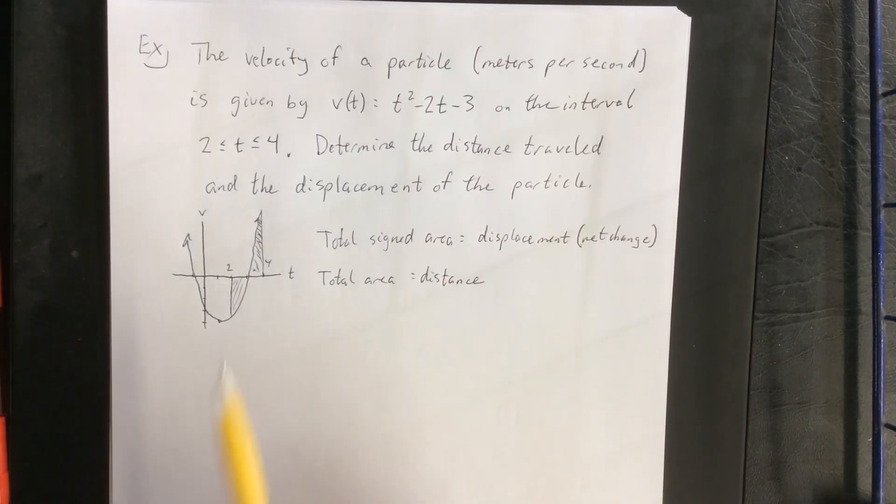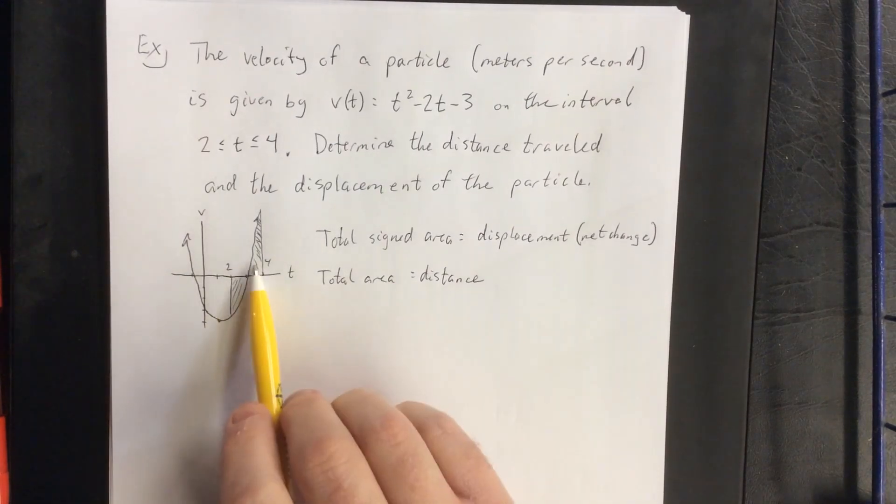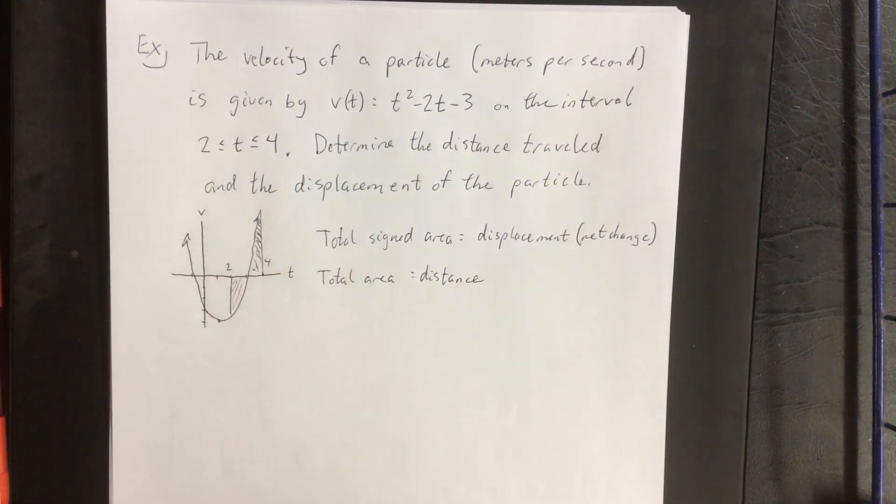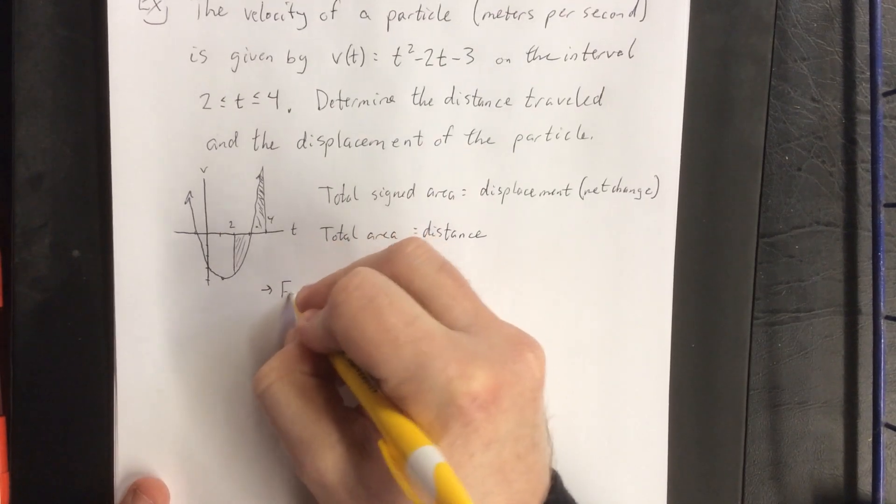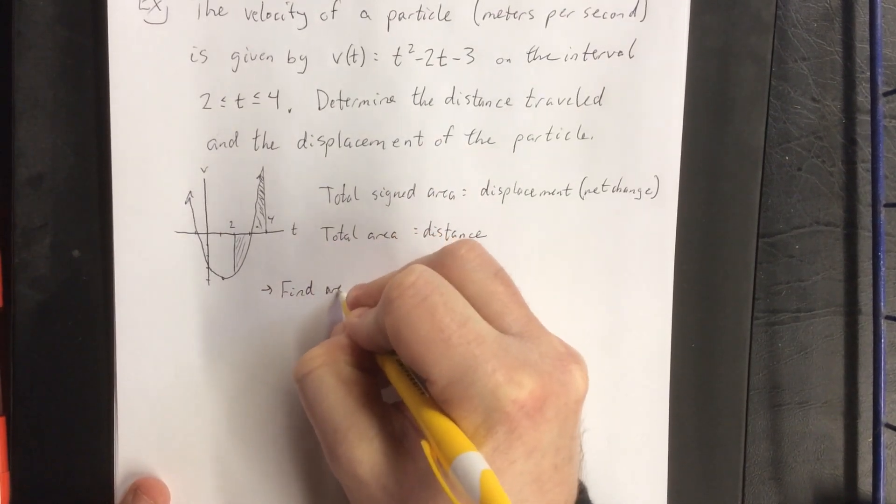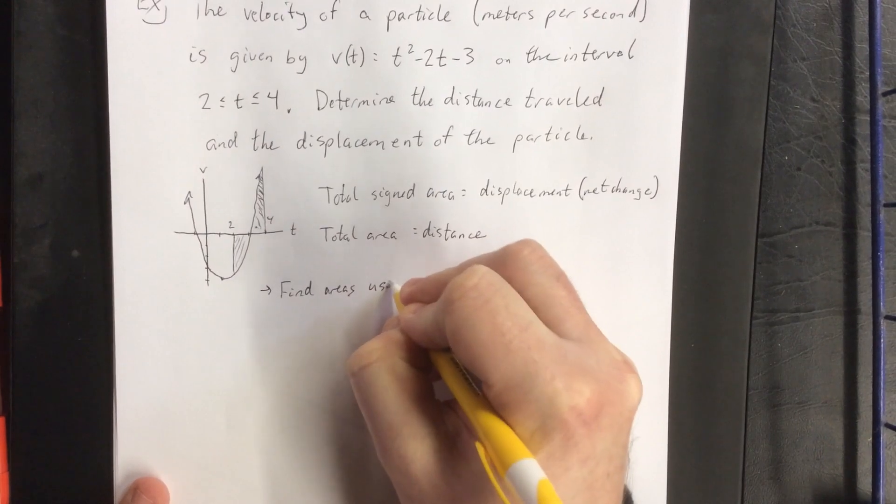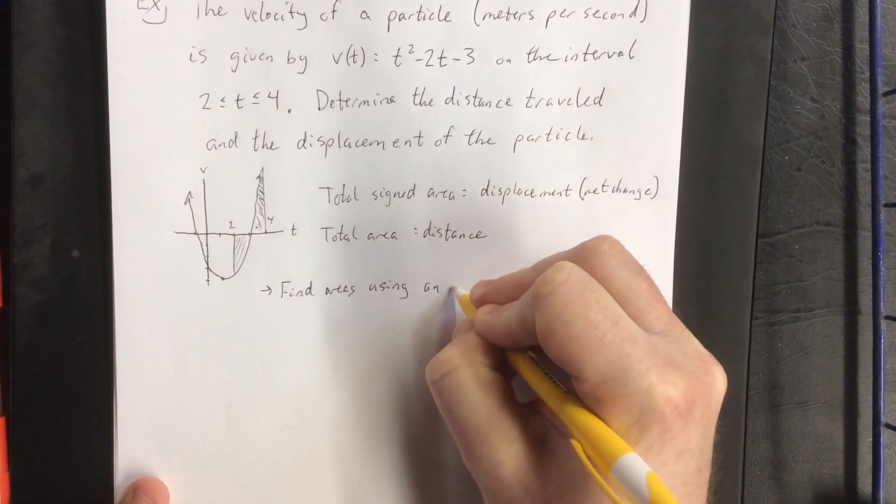Now the total area without regard to sign, that'll be the total distance traveled. Ultimately we're going to need to figure out how much area we have on the negative side and how much area we have on the positive side. So to figure out those two areas, we are going to be taking an integral to find areas using an integral.